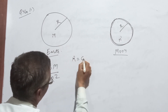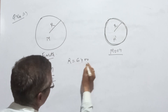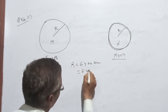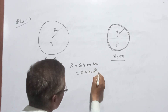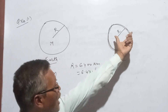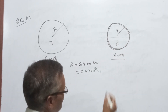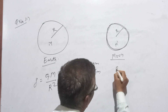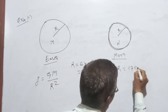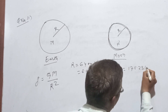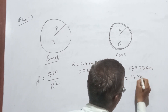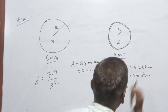This is the radius of the Earth: 6.4 into 10 to the power of 6 meters. We have to look at the radius of the Moon, which is 1,712.3 kilometers, which is 1.7 into 10 to the power of 6 meters.